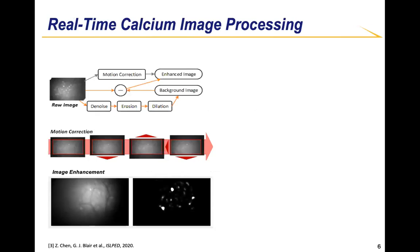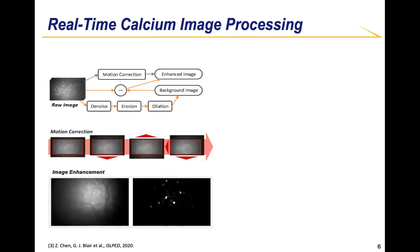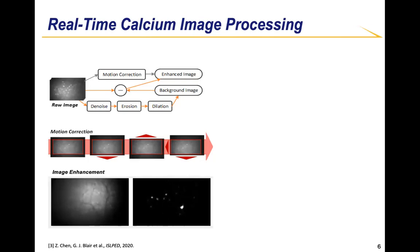Our pipeline includes three processing steps. The first two are motion correction and calcium image enhancement. Motion correction is an important pre-processing step that helps remove motion artifacts in the raw video caused by the movement of brain tissue during recording. The image enhancement removes the bulk of the calcium image background and improves the signal-to-noise ratio, as the video clip shows.